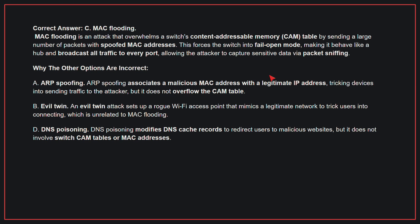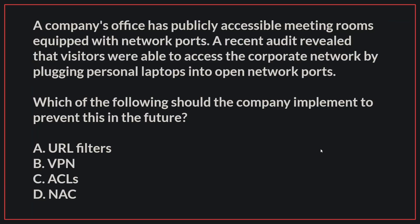Why the other options are incorrect: A, ARP Spoofing, associates a malicious MAC address with a legitimate IP address, tricking devices into sending traffic to the attacker, but it does not overflow the CAM table. B, an Evil Twin attack sets up a rogue Wi-Fi access point that mimics a legitimate network to trick users into connecting, which is unrelated to MAC flooding. D, DNS Poisoning modifies DNS cache records to redirect users to malicious websites, but it does not involve switch CAM tables or MAC addresses. Therefore, the correct answer is C, MAC flooding.